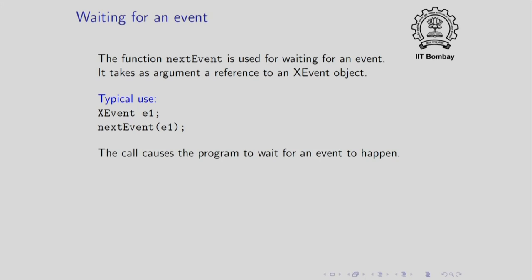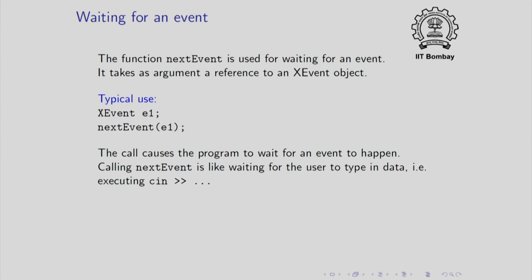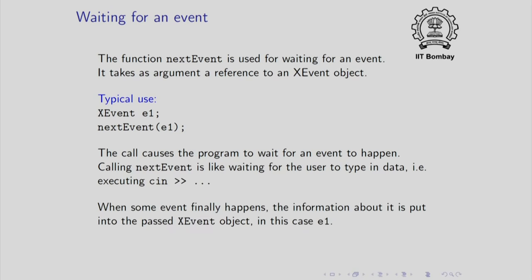This call causes the program to wait for an event to happen. Calling next_event is like waiting for the user to type in data — just as your program waits when you execute cin, when you execute next_event your program also waits until any of the specified events happen. When an event finally happens, the information about that event is put by simple CPP into the event object passed to next_event. After this, the execution continues, and the event object will contain information about what event has happened.